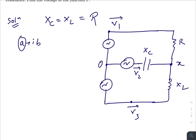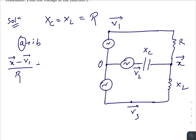To find X I am using the junction rule, so the sum of currents equals zero. We can write: (X − V1) divided by R, plus (X − V2) divided by (−jX_C), where j is the imaginary unit, plus a third term for the inductor.